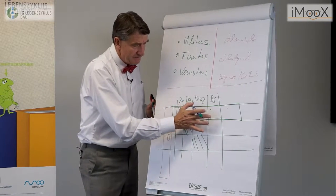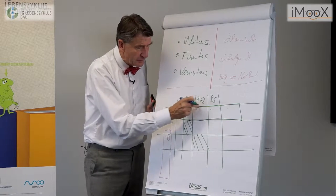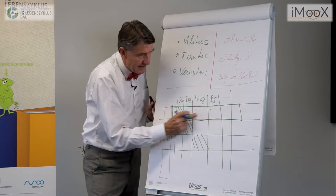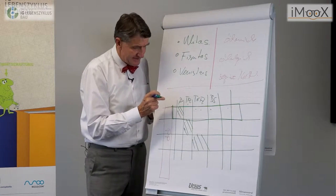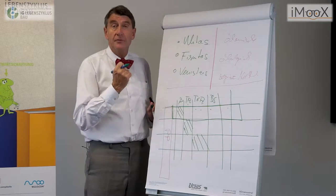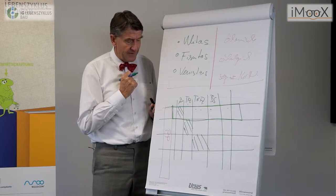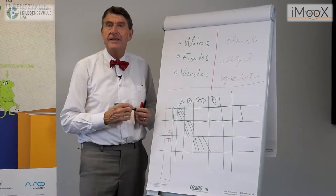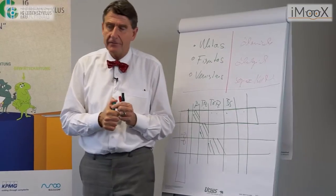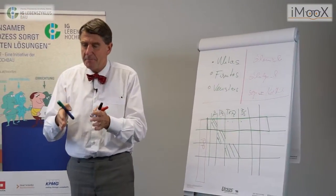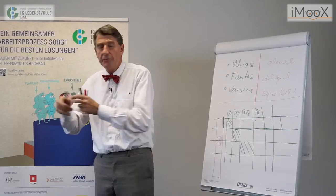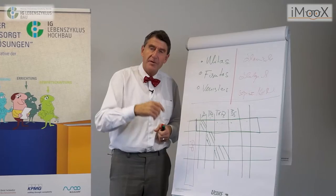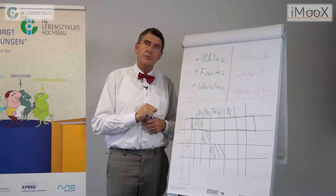Wenn man diese Systematik anwendet, sieht man, wie viele Redundanzen es zwischen den einzelnen Spezialisten gibt. Um diese Redundanzen auszuschließen, brauchen wir ein Leistungsbild oder eine Honorarordnung, die sich nur mehr an Ergebnissen in den einzelnen Phasen orientiert. Ergebnisse sind die Voraussetzung dafür, dass man in der jeweiligen Phase planen, ausschreiben und bauen kann – und das ist der Schlüssel zu einer neuen, zukunftsorientierten Planungskultur.